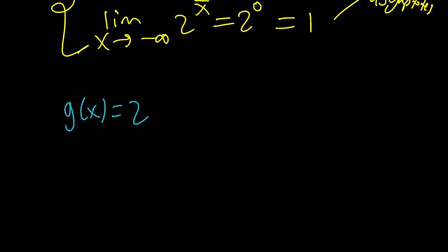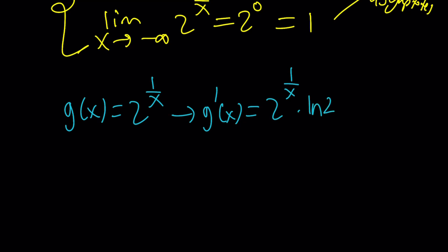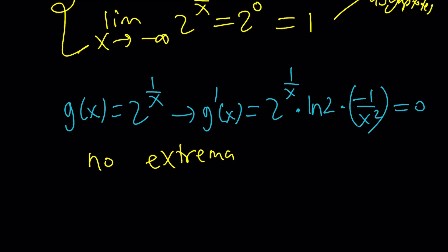One more thing — let's go ahead and differentiate g of x. If you differentiate 2 to the power of 1 over x, you get the same thing multiplied by ln 2, then multiplied by the derivative of the inside by the chain rule, which is negative 1 over x squared — that's the derivative of 1 over x. If you set it equal to 0, you're going to notice something interesting: there is no x value that makes it 0, which means there are no extrema for this function. The asymptotes split it up into pieces, and those pieces are either always increasing or always decreasing.